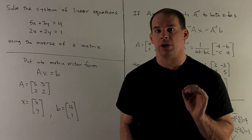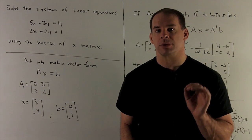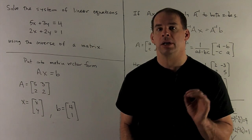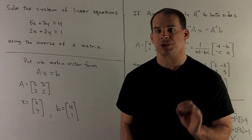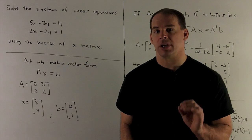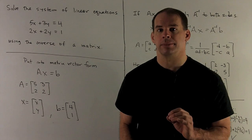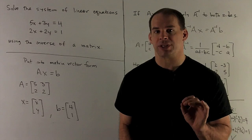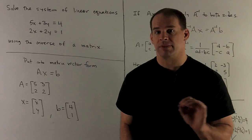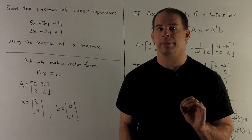Solve the system of linear equations 5x plus 3y equals 4, 2x plus 2y equals 1 by using the inverse of a 2 by 2 matrix. First step, we put our system of linear equations in matrix vector form.